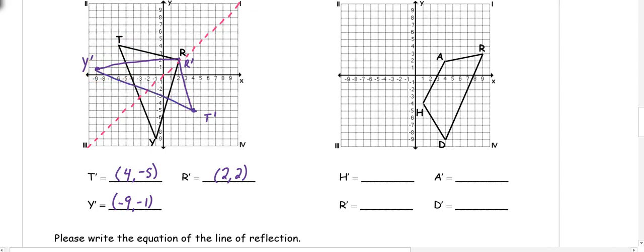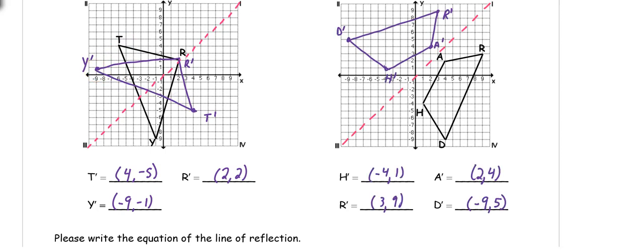Pause the video and try number 6. Once you perform your reflection, you should have: H prime at (-4, 1), A prime at (2, 4), R prime at (3, 9), and D prime at (-9, 5).